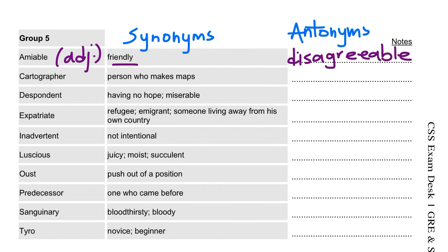Next is cartographer. Cartographer is a noun. This is an important word in past papers. It means a person who makes maps. There are different types of maps, and the person who makes them is called a cartographer.